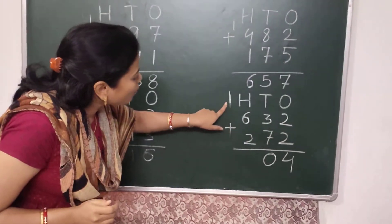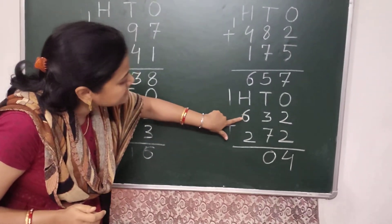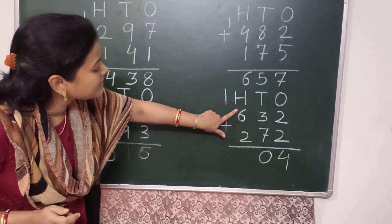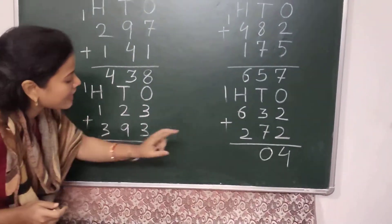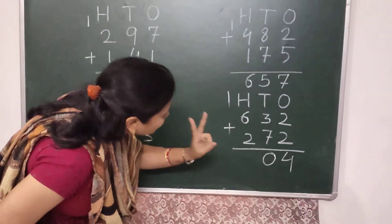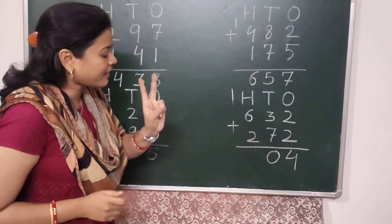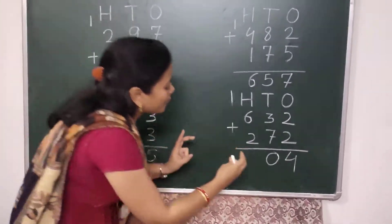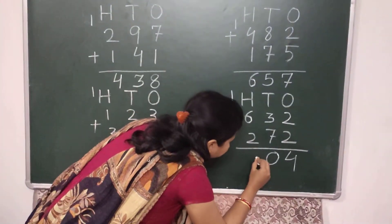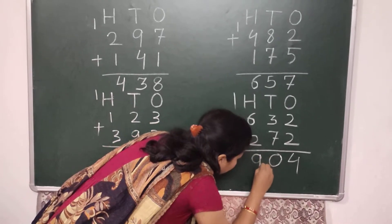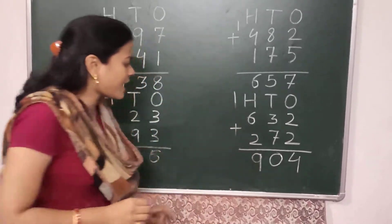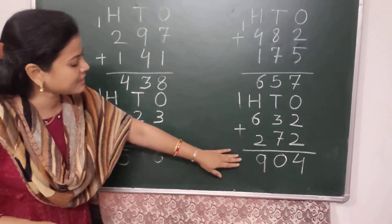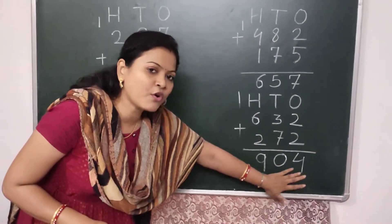In the 100's place, 1 plus 6 is 7. I keep 7 in my mind and take 2 fingers: 7, then 8, then 9. I write here 9. So your answer is 904.